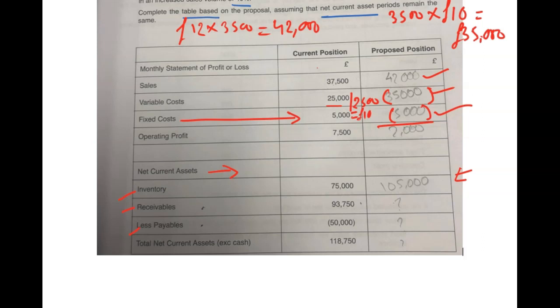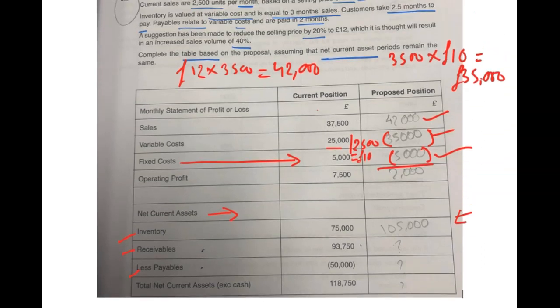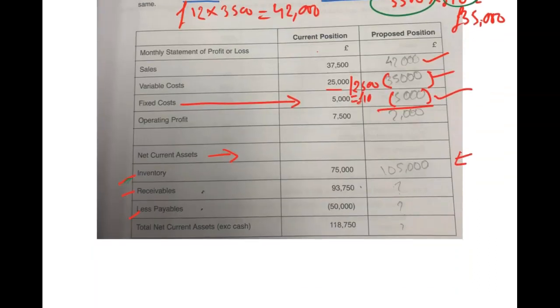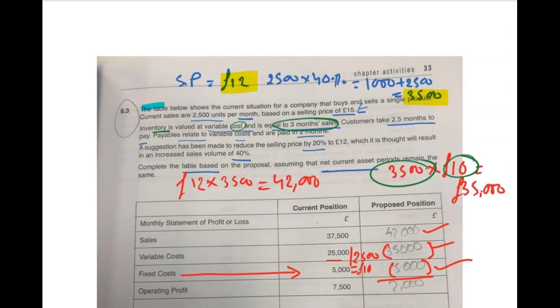Let's go to the inventory information. What is being said? We have already seen it. Inventory is valued at variable cost, so our variable cost is £10, if you remember, people. And it equals three months sales. Our each month sales is 3,500, so we want to do some working at the bottom for this inventory. Variable cost of £10 and sales are 3,500 units each month, but it is three months.